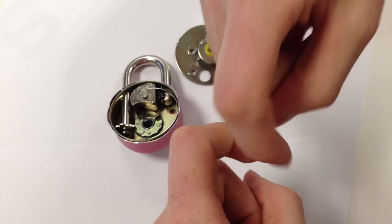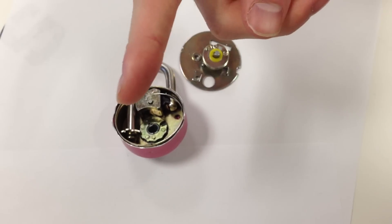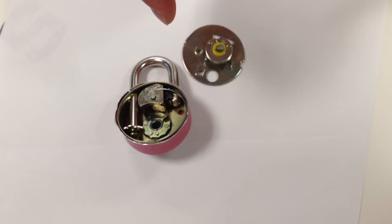It starts spinning both of them together until the notch of the second wheel hits the notch of the third wheel, which in turn makes all three wheels start spinning in unison.